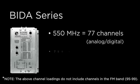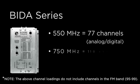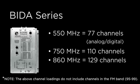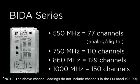The next step is 750 MHz, which covers 110 channels. 860 MHz equates to 129 RF channels, and 1000 MHz is 150 RF channels. If you have a channel count that falls between two frequency ranges, pick the higher one to ensure that you are covering the range of channels you have.